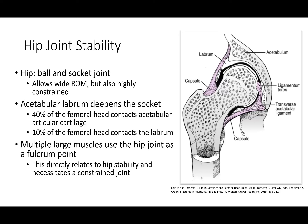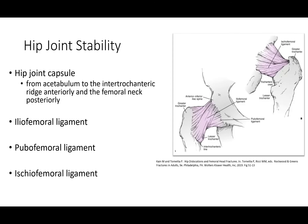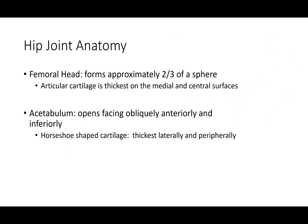Here you can see, at least on a coronal cross-section, some of the important anatomic structures. The hip joint capsule is made up of multiple coalescent ligaments: the iliofemoral ligament, pubofemoral ligament, and ischiofemoral ligament, shown anteriorly on the bottom and posteriorly on the top. The femoral head is generally spherical, forming about two-thirds of a sphere. The articular cartilage is thickest on the medial and central surfaces, and the acetabulum opens obliquely, slightly anteriorly and inferiorly, with cartilage thickest laterally and peripherally.